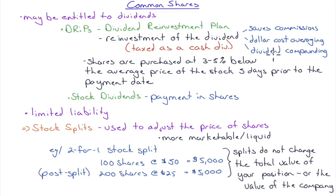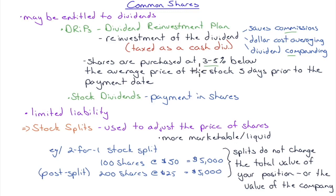DRIP also provides dividend compounding. Say your dividend is $0.87 per quarter — that may not be enough to buy shares outright when accounting for commissions. But with a DRIP, you receive shares immediately, so the next dividend cycle those additional shares also earn dividends. You're getting dividends on your dividends, compounding faster. Additionally, DRIP shares are sometimes purchased at 3–5% below the market price from five days prior to the payment date, with 3% being the most common discount.